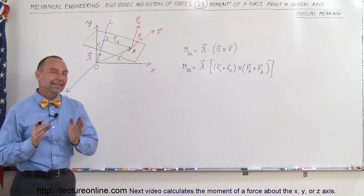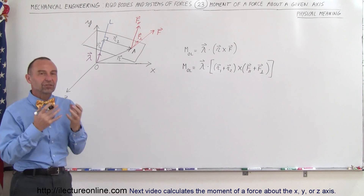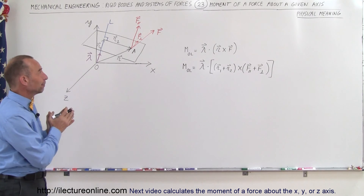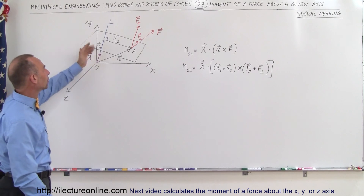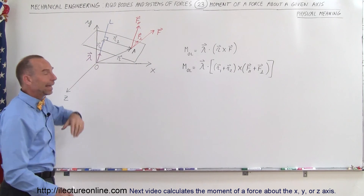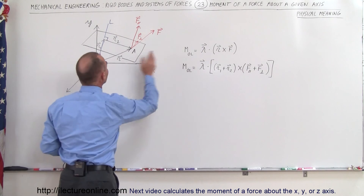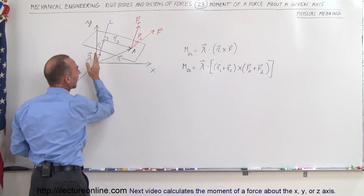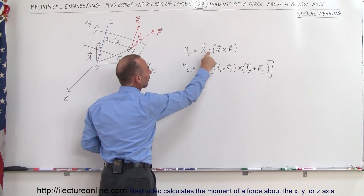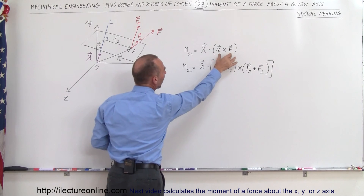Welcome to our lecture online. In this video we're going to try and get a physical sense, a physical meaning of what's actually happening here. We're trying to calculate the moment of a force about a given arbitrary axis from O to L. In the previous video we saw that the moment about the line from O to L is equal to the unit vector along that axis multiplied via a dot product with R cross F.